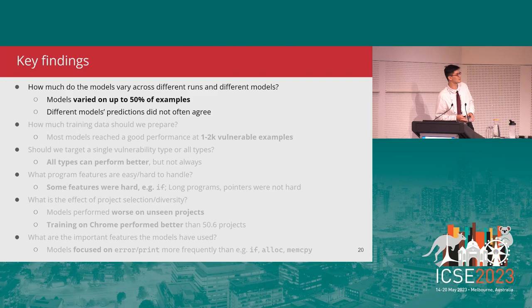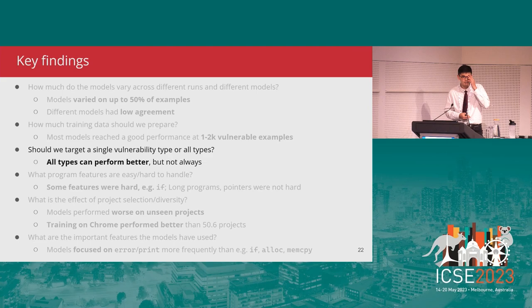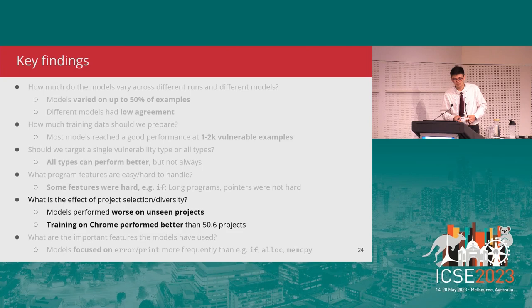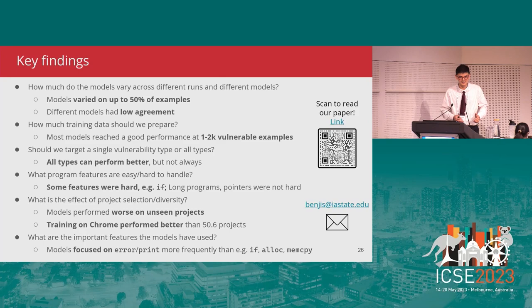To summarize the key findings: models varied on up to 50% of dataset examples and different model predictions were often not in agreement. Most models reached good performance at 1,000 to 2,000 vulnerable examples. Training with all bug types can perform better. Some features like if statements were difficult, while program length and pointers were not. Models performed worse on unseen projects, and training on one project performed better than training on many for unseen projects. Models also focused on features like error and printf more frequently than if statements and memcopy. Thank you, and I'll be glad to take questions.